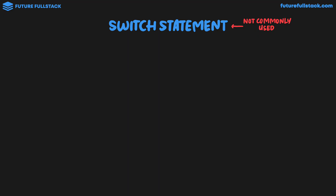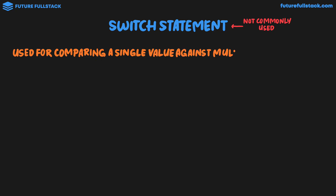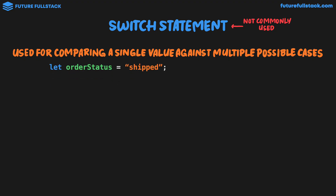A switch statement is used for comparing a single value against multiple possible cases. To demonstrate this I'm going to be going through the status of shipping an order on an e-commerce website. Let's say we have a variable: let orderStatus equal the string shipped. We can then use our switch statement to look at different cases.